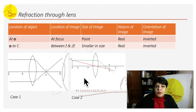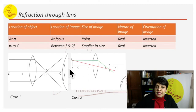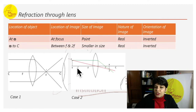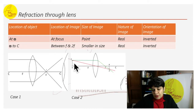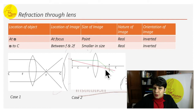Case 2: object is placed between infinity and C (2f). The image is formed between f and 2f. The image is smaller in size, real, and inverted. One ray comes parallel and passes through the focal point; another ray passes through the center of the lens, and they meet between f and 2f.